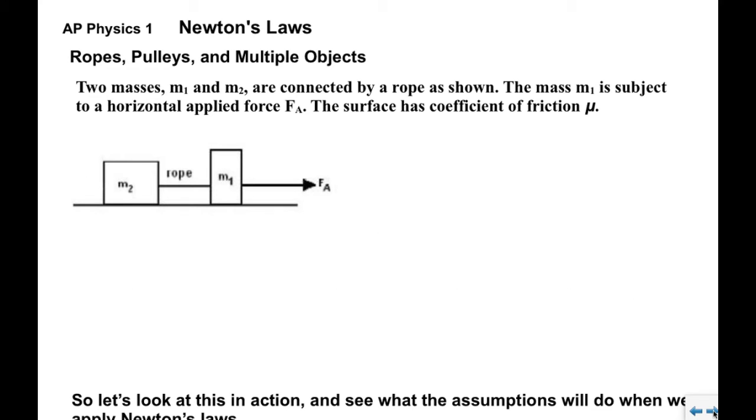Okay, so here's a situation: we have two objects M1 and M2 connected by a rope, and there's an applied force, a horizontal applied force that's going to accelerate these things across the surface which has friction.